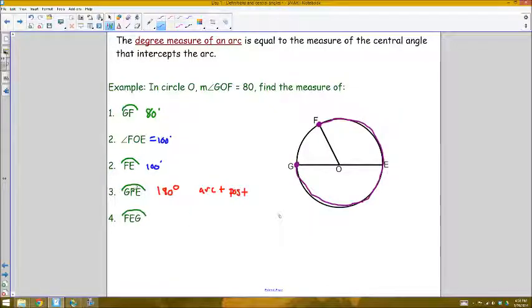Well since I already know that arc FE is 100 and GE is a semicircle meaning that it takes up half the circle or 180 degrees of the circle, then the combined arc 100 and 180 would be 280 degrees.